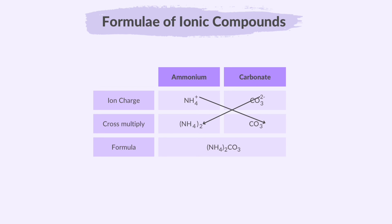One more example: ammonium carbonate. Once you cross-multiply the charges, we enclose the compound ion that is needed more than once in brackets. In this case, carbonate is not enclosed in a bracket because only one of it is needed.